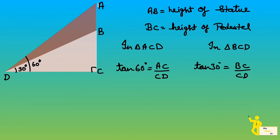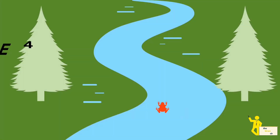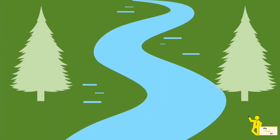Both triangles have the same common base. First, solve triangle ACD using tan 60 degrees, then solve the smaller triangle BCD using tan 30 degrees. Since both triangles share a common base, substitute the value of CD from one triangle into the other to get the answer.